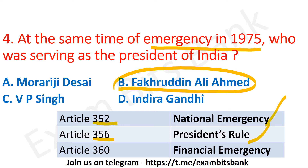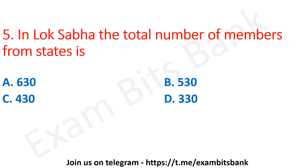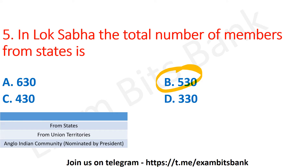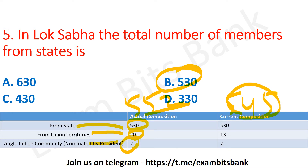In Lok Sabha, the total number of members from states is: 630, 530, 430, or 330? The correct answer is option B — 530. The actual composition of Lok Sabha is 552: 530 from states, 20 from union territories, and 2 nominated by the President from the Anglo-Indian community. The current composition is 545: 530 from states, 13 from union territories, and 2 nominated by the President from the Anglo-Indian community.